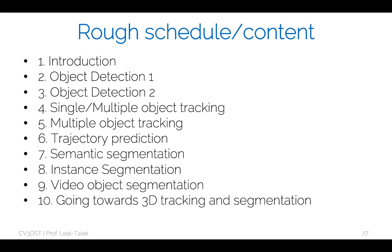The rough content of the lecture, aside from this introductory lecture, will be two lectures on object detection — one-stage and two-stage — then single and multiple object tracking for two lectures. We'll have a lecture on trajectory prediction and generative adversarial networks. Then we move towards mask representation: semantic segmentation, instance segmentation, and video object segmentation. Finally, as a last step, we'll go towards the 3D world and see how tracking and segmentation are done there.